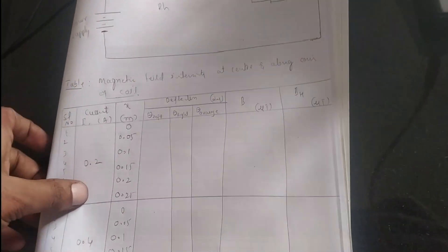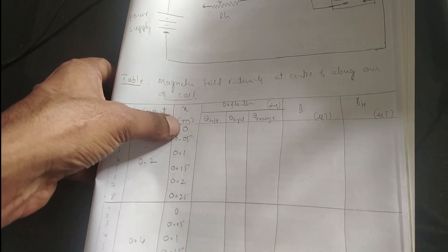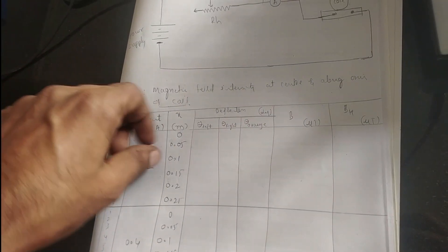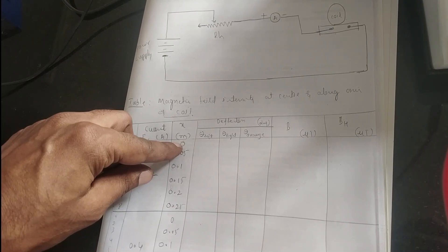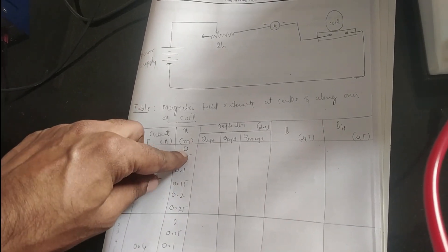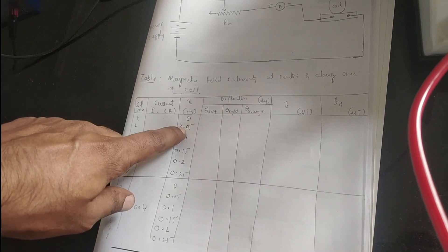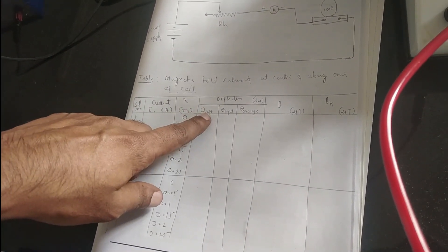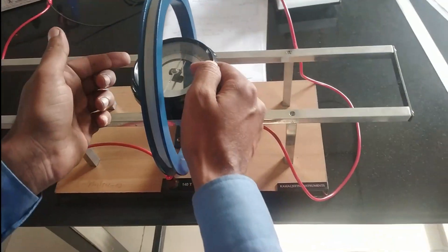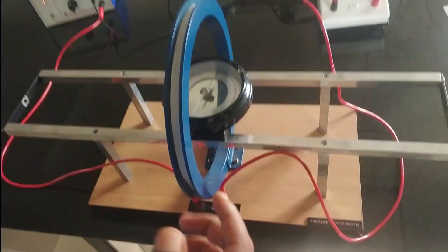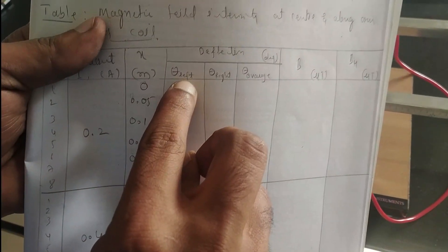Once the current strength is adjusted, note the value of magnetic field intensity measured as deflection as a function of distance. At x = 0 (center of coil), note the deflection on the left side — it reads nearly 78.8°. The axis distance 0 indicates the center of the coil; 0.05 m (5 cm) indicates a point along the axis.